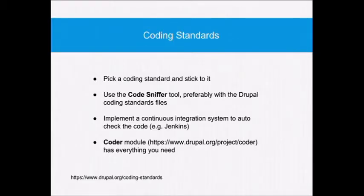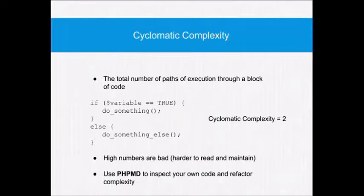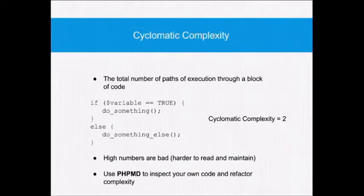The Coder module has everything you need to look at coding standards inside your site, so it's worth a look. Without getting too bogged down in how to write code, I want to note on cyclomatic complexity — an easy way to understand how code is executed. It's the number of paths of execution through a code block. An if statement has a cyclomatic complexity rating of 2 because it can go either to 'do something' or 'do something else.' Anything above 10 makes life difficult because it makes the code really complicated — trying to figure out all the different execution paths. High number's bad — a nice, easy metric.